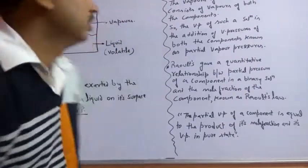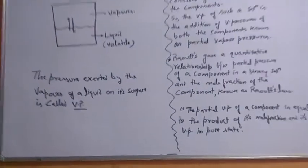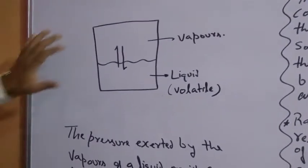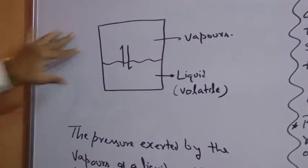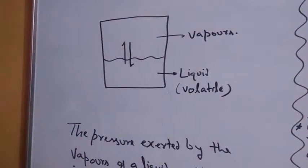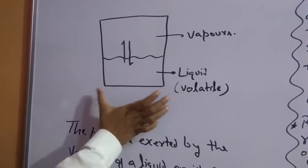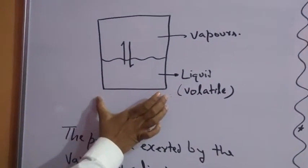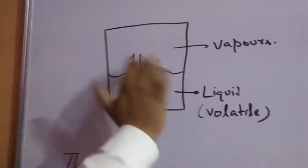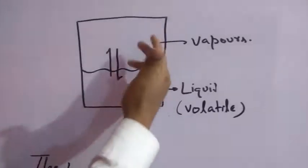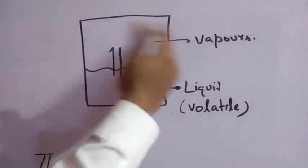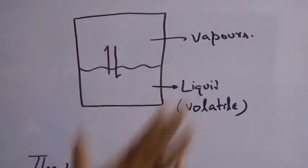First of all, you will have to understand what Vapor Pressure means. For this, you will have to consider this diagram. In this diagram, there is a volatile liquid below the container, and above the liquid surface, the upper part is empty.